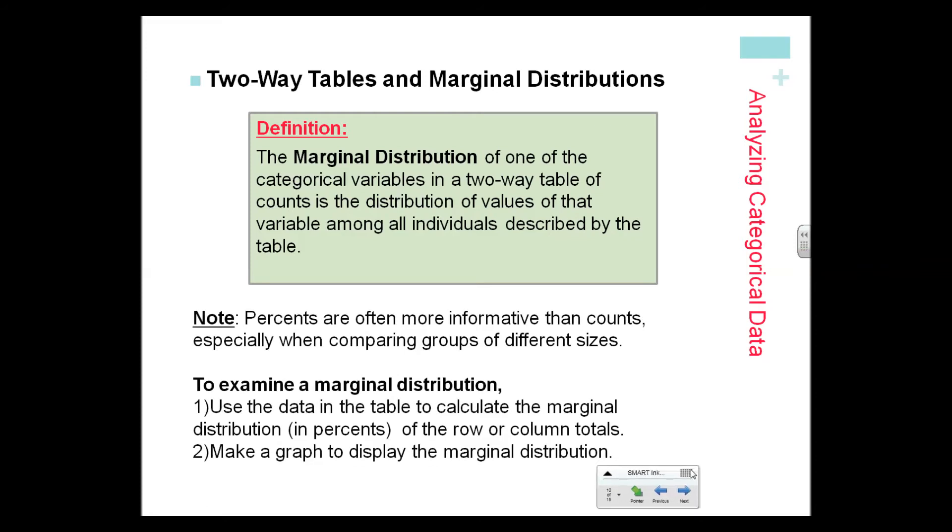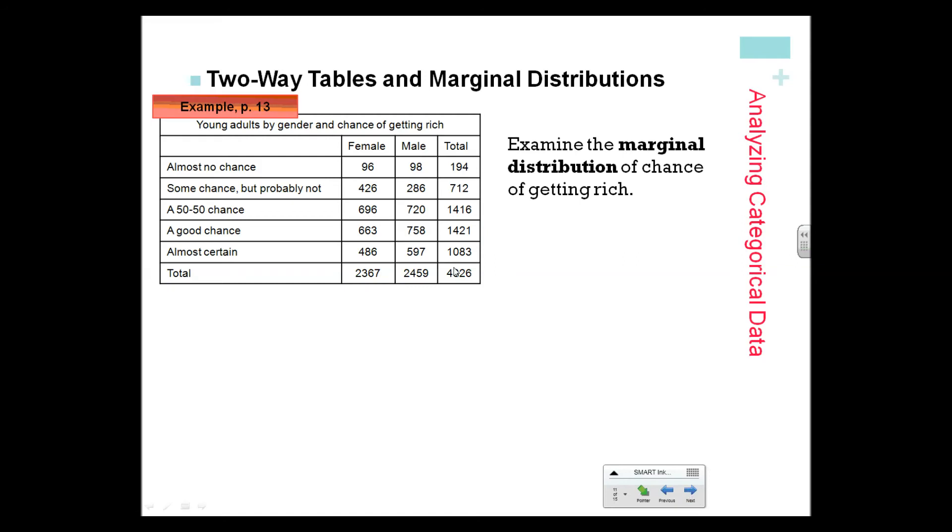There are two types of percents we're going to look at. First of all, the marginal distribution. Percents are often more informative than counts, especially when comparing groups of different sizes. Marginal distributions—remember, the word margin means we're going to be dividing by the grand total of all the people that were interviewed, so we're going to use this number here, 4,826, to get our marginal totals.